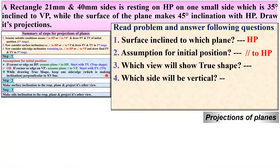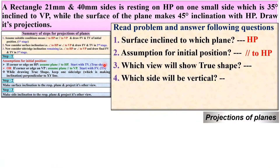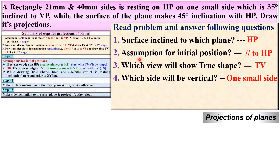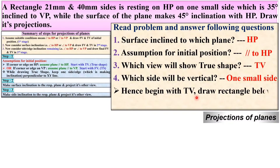Which view will show the true shape? If you assume the plane is parallel to HP, then in the top view you will see the true shape — so the answer is top view. Which side will be vertical? It is resting on HP on one small side, so one small side will be vertical. Since the plane is assumed parallel to HP, you should start the problem in the first stage with the top view.